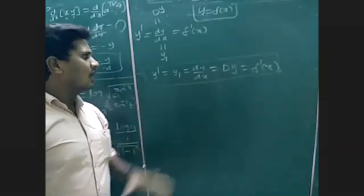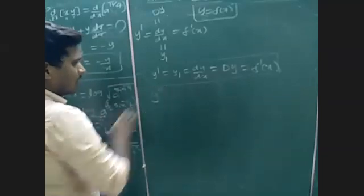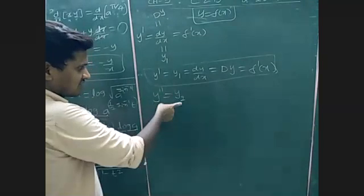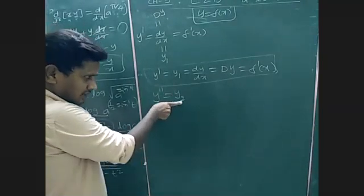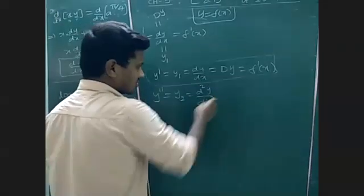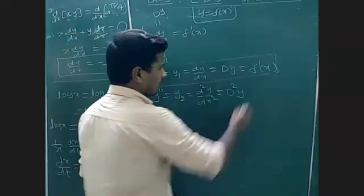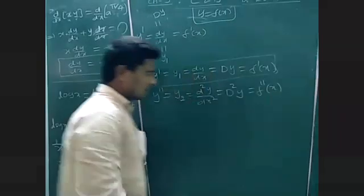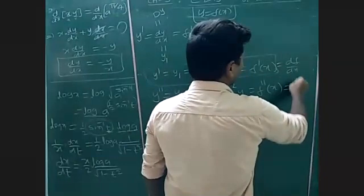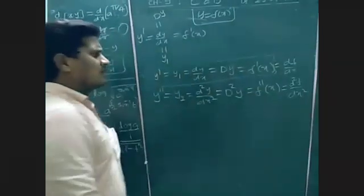All these represent the derivative of y with respect to x — the first derivative. How to write the second derivative? The second derivative can be written as y double dash (y''), or y₂ (y suffix 2) — this means second derivative of y. Or d²y/dx², or capital D²y, or f''(x). We can write it in many ways.